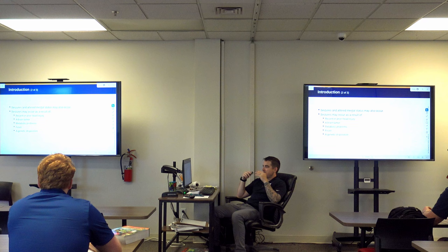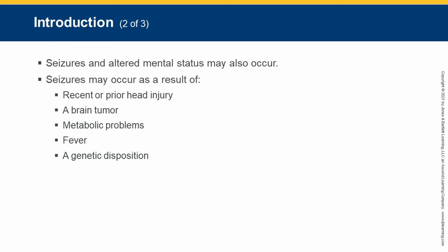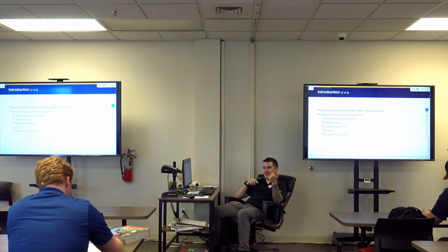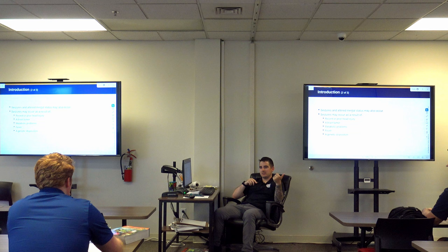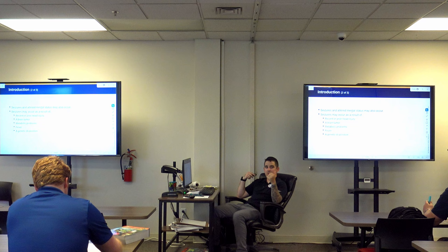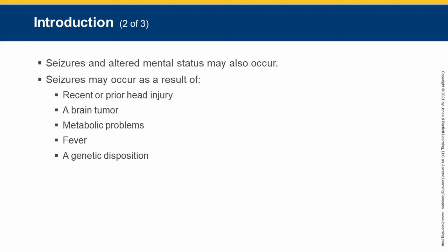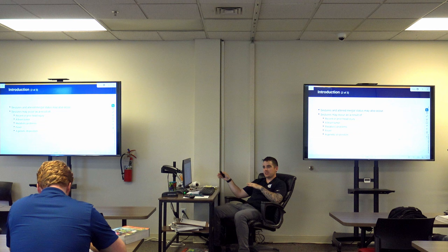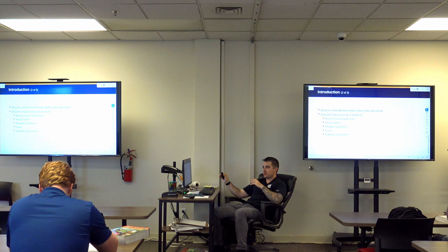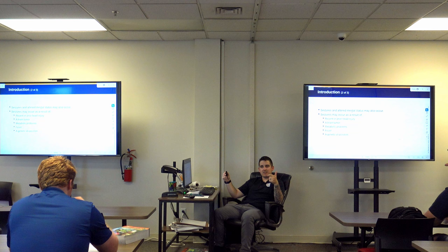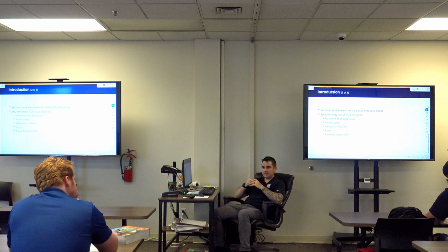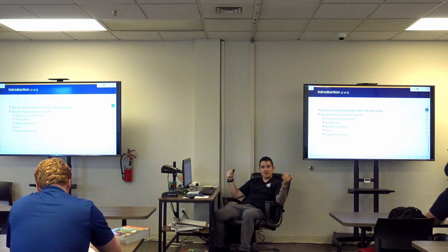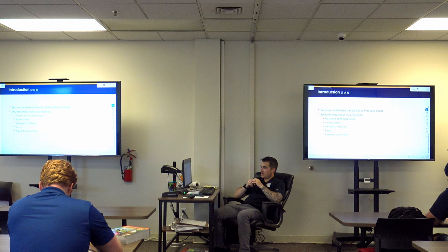Seizures are more of a neurological issue and can occur as a result of many different things — prior head injury, blood clots, active bleeding in the brain, neurological damage, brain tumors, metabolic problems, and fever. Fever-related seizures are more common in kids, especially under six. New onset seizures in that age group — think febrile seizure. And then genetic disposition, which is probably the majority of seizure calls — epilepsy.